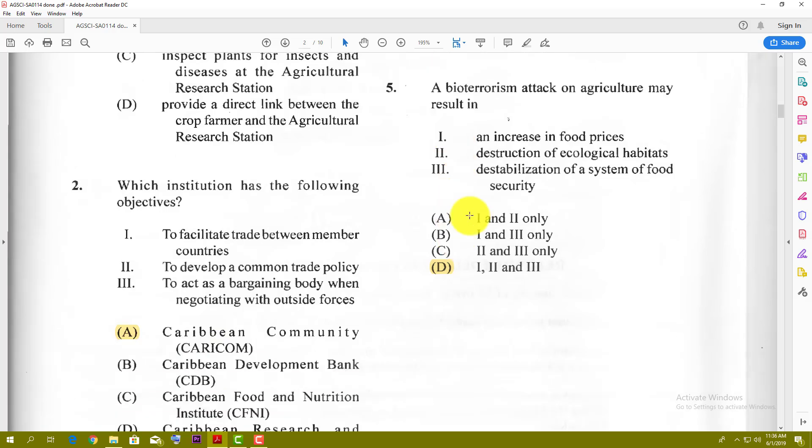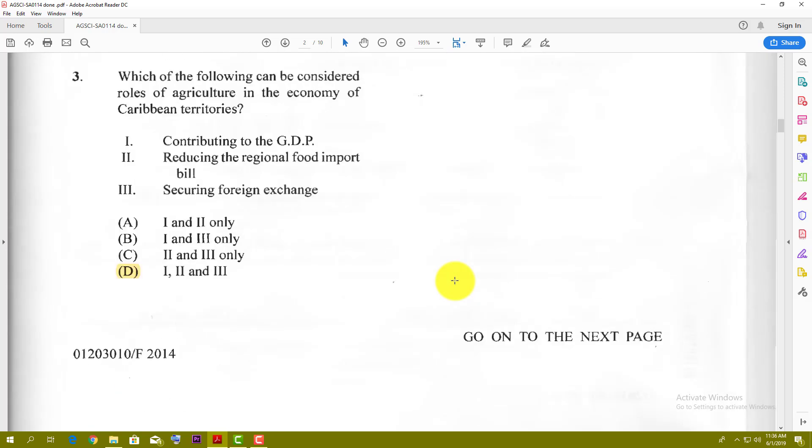Number 5: Bioterrorism attack on agriculture may result in an increase in food prices, destruction of ecological habitats, and destabilization of a system of food security. The best answer is D, all of the above. Bioterrorism attack will affect all of the above.